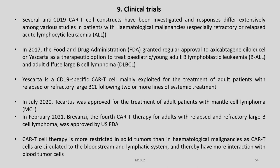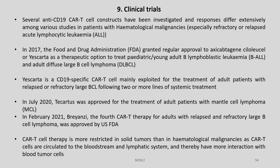In July 2020, Tecartus was approved for the treatment of adult patients with mantle cell lymphoma. In February 2021, Breyanzi, the fourth CAR T-cell therapy for adults with relapsed and refractory large B-cell lymphoma, was approved by the US FDA. CAR T-cell therapy is more restricted in solid tumors than in hematological malignancies, as CAR T-cells circulate in the bloodstream and lymphatic system and thereby have more interaction with blood tumor cells.